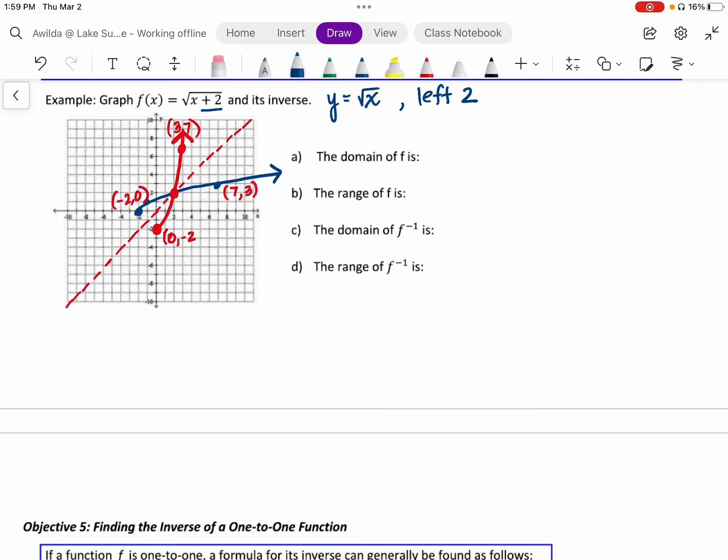The domain for the original f function includes values from negative 2 through positive infinity. The range starts at 0 with no upper bound. Again, we're looking at the blue graph. The domain of its inverse will be the same as the range of the original function. And you should be able to verify this by looking at the red graph. The lowest x value on the graph is 0 and it will continue traveling to the right without bound. The range for the inverse is the domain of the original function. Therefore, we're going from negative 2 with no upper limit. And again, you can verify this from the red graph because the red graph has a lowest y value at negative 2 with no maximum value.